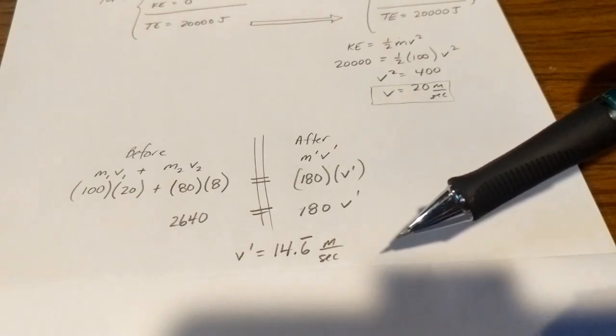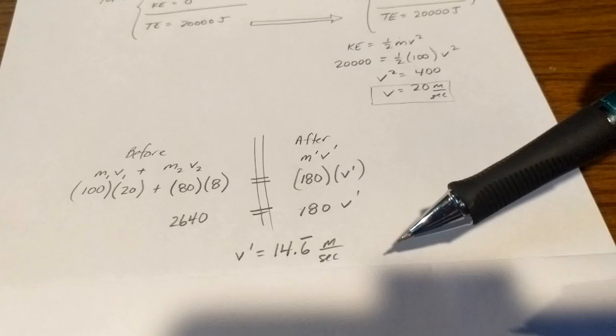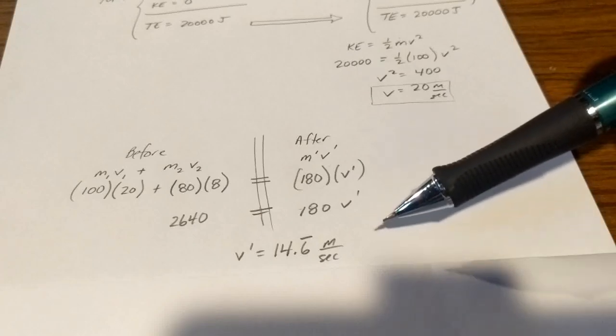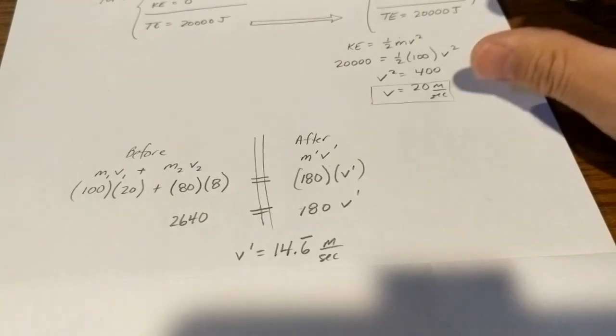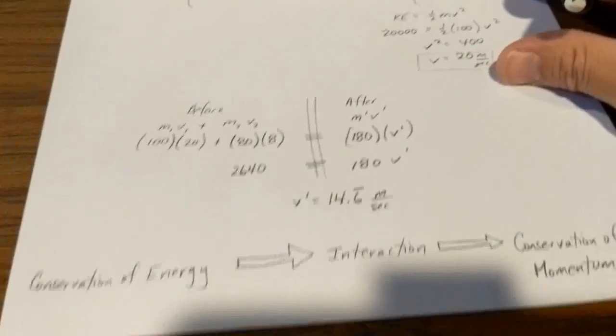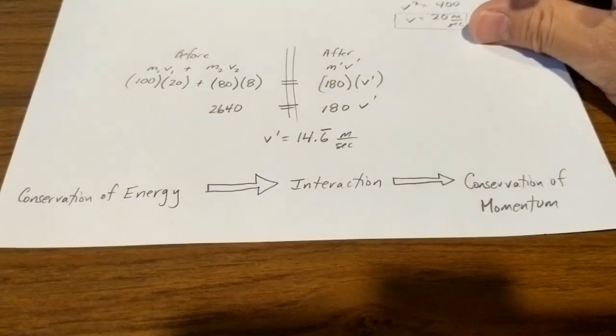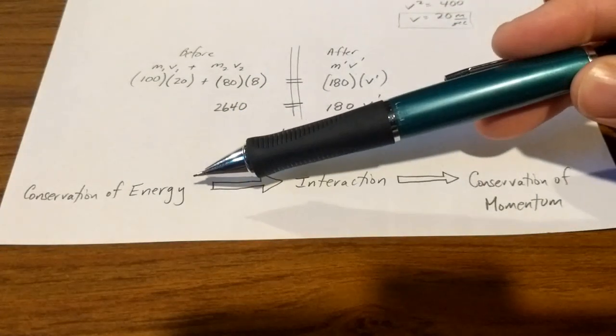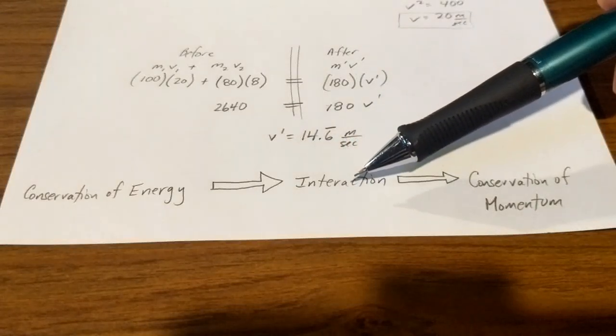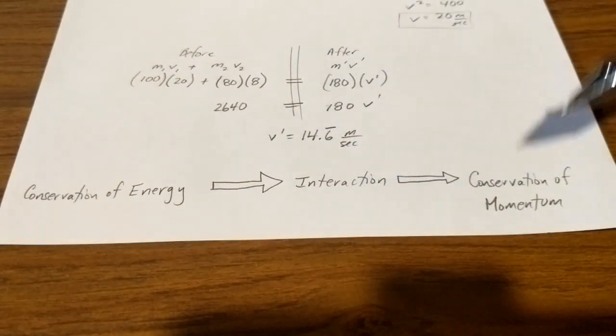This is our first combination of energy and momentum situation that you've already done on your last homework assignment, which was the momentum assignment. If we were to map out the concepts here, we would say that we first dealt with conservation of energy, then that led to an interaction where we had to use conservation of momentum.